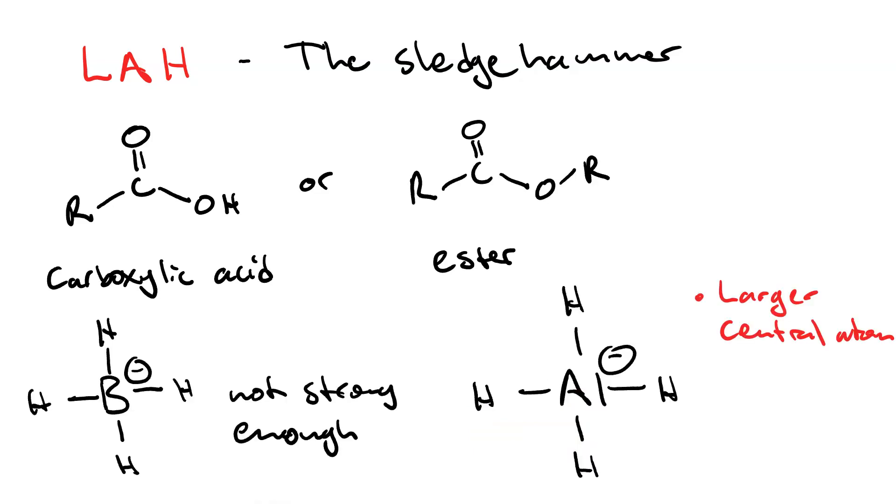LAH, on the other hand, has a larger central atom. Aluminum is larger than boron. Being larger, it is more polarizable. Being more polarizable, LAH is a stronger nucleophile.